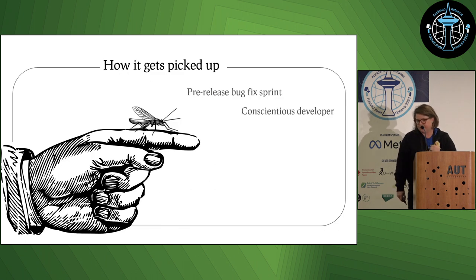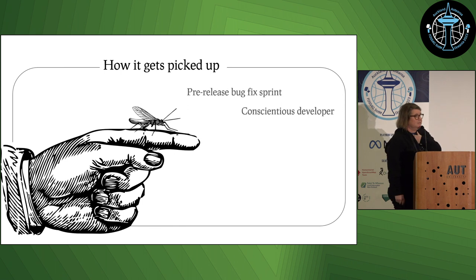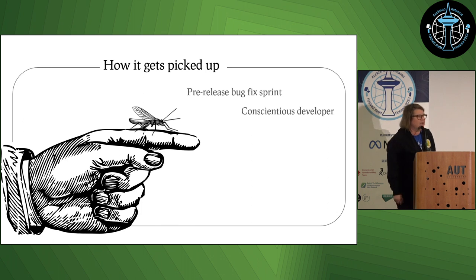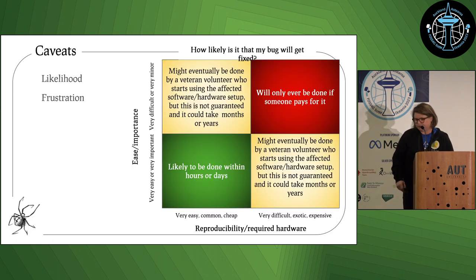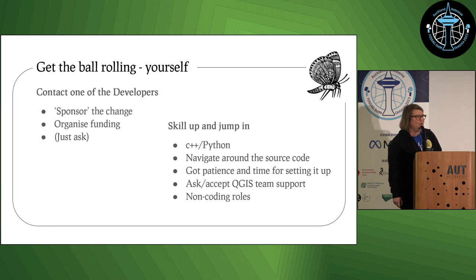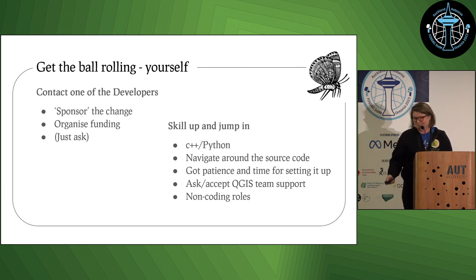There's a pre-release bug sprint funded by the QGIS project, and issues also get picked up by conscientious developers with an attitude of 'I broke it and I'll fix it.' Notifications and keywords are key. If you're feeling frustrated, here are some ideas to get the ball rolling yourself: sponsor it, fund it, or skill up.